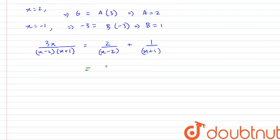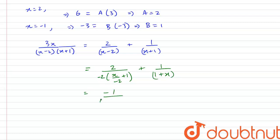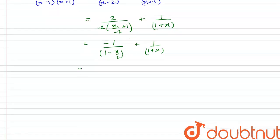Now we rewrite this expression. We take minus 2 out of the first denominator, giving minus 1 over (1 minus x/2), and the second term is simply 1 over (1 plus x). So the full expression becomes 1 over (1 plus x) minus 1 over (1 minus x/2), which we write as (1 plus x) to the power minus 1 minus (1 minus x/2) to the power minus 1.